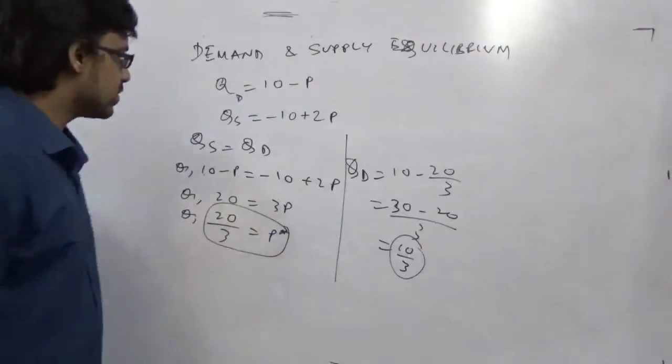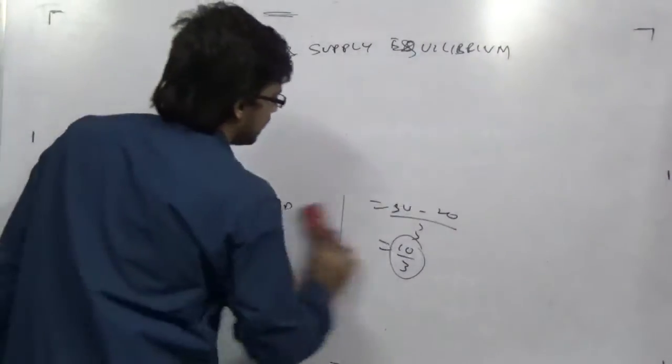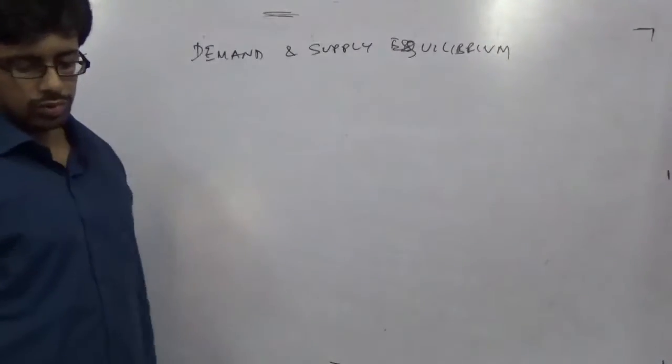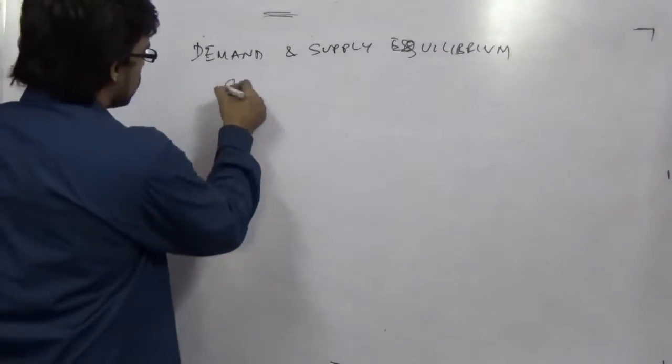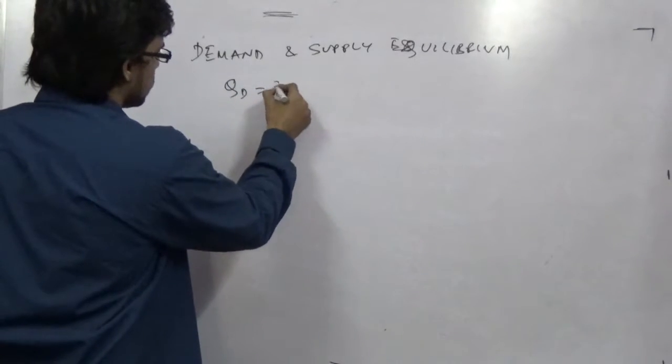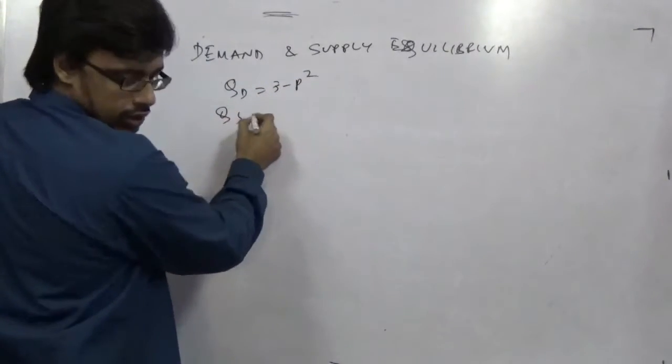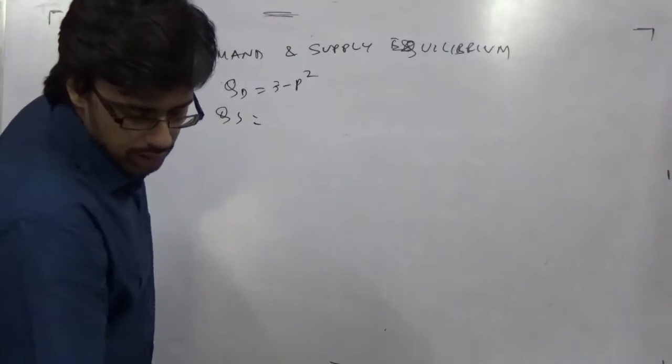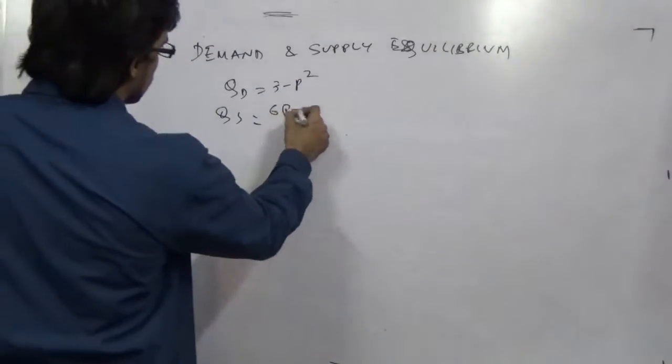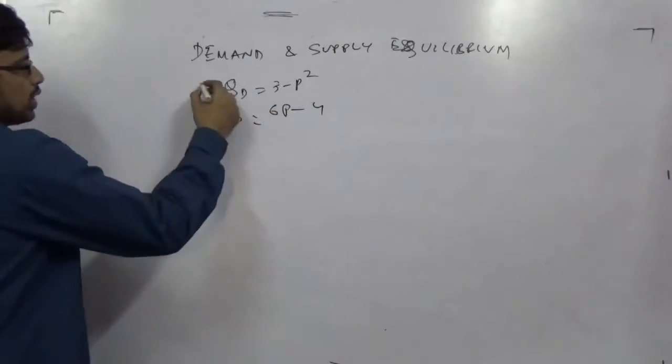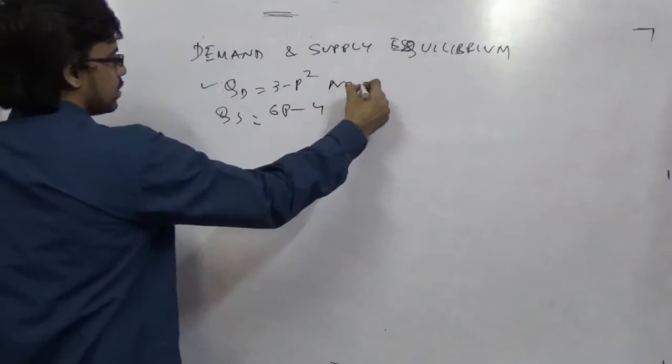Now, a non-linear case. Non-linear demand curve and its solution. Demand curve with non-linearity, like qd equals 3 minus p square, and qs equals 6p minus 4. How do we solve it? This one is a non-linear one and this one is a linear one.